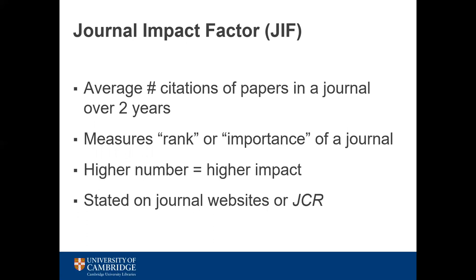The JIF is one of the most common metrics in use. It's calculated by the number of citations papers in the journal receive on average over the preceding two years. It measures the rank or importance of a journal — the higher the number, the higher the impact the journal is supposed to have. You can find JIFs on journal websites, or the JCR, Journal Citation Reports, module of the Web of Science.